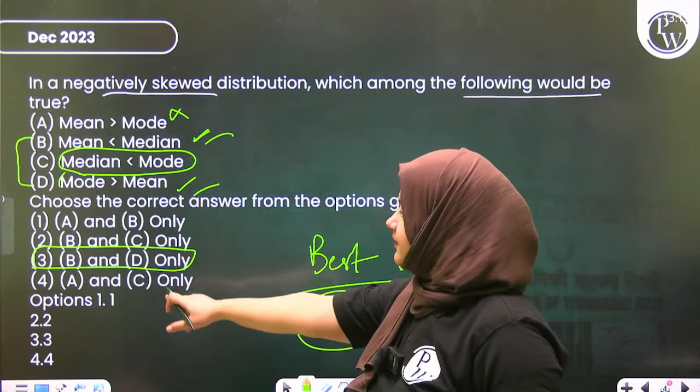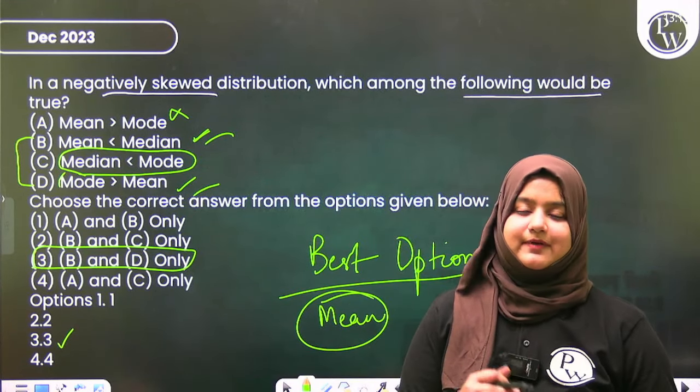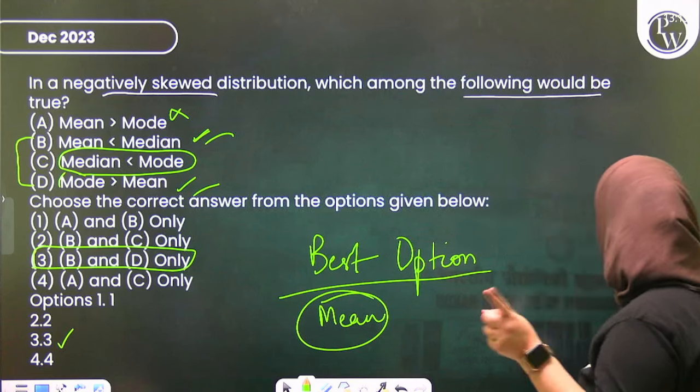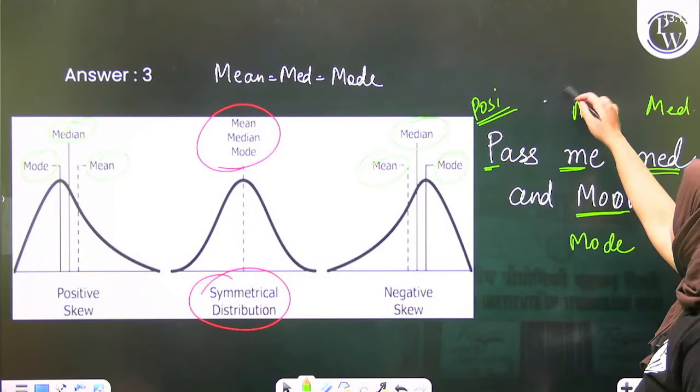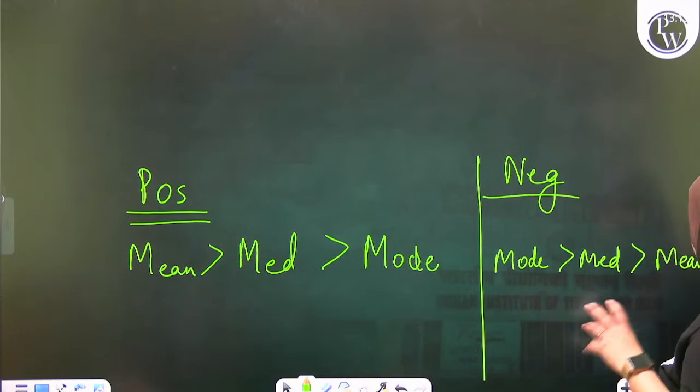Therefore the correct answer is option number 3. This was your concept of positive and negative skewness. I guarantee you won't make mistakes now if you use this trick: "Pass me medicine and move."